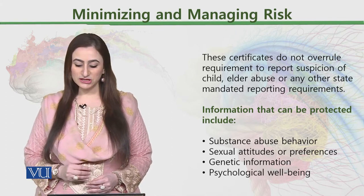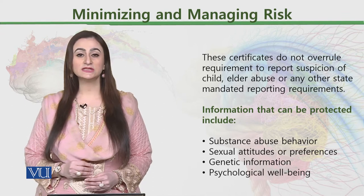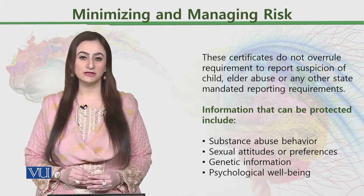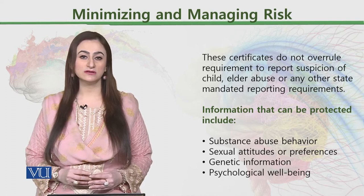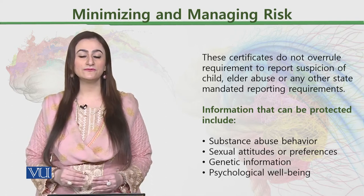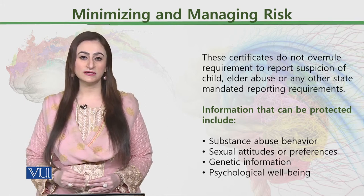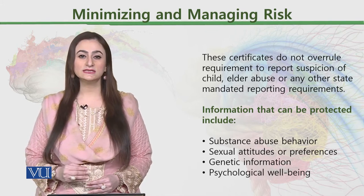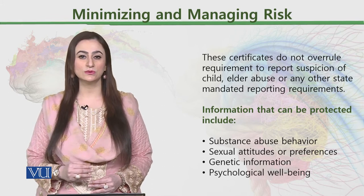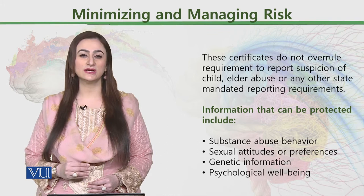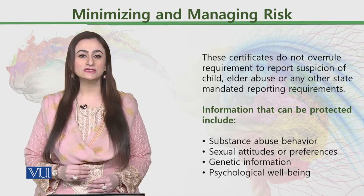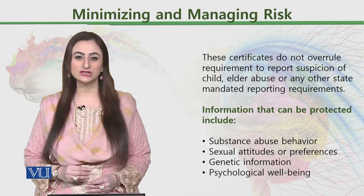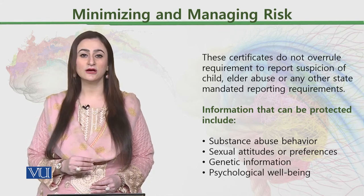Information that can be protected includes substance abuse behavior, sexual attitude and preferences, genetic information, and psychological well-being. These four are the main areas where confidentiality certificates apply. अगर किसी की psychological well-being, sexual preferences, या genetic information openly disclose नहीं की जाए तो यह किसी अन्य person को threat नहीं देती। However, when it comes to abuse, neglect, or trauma, then the confidentiality certificate must be broken down.